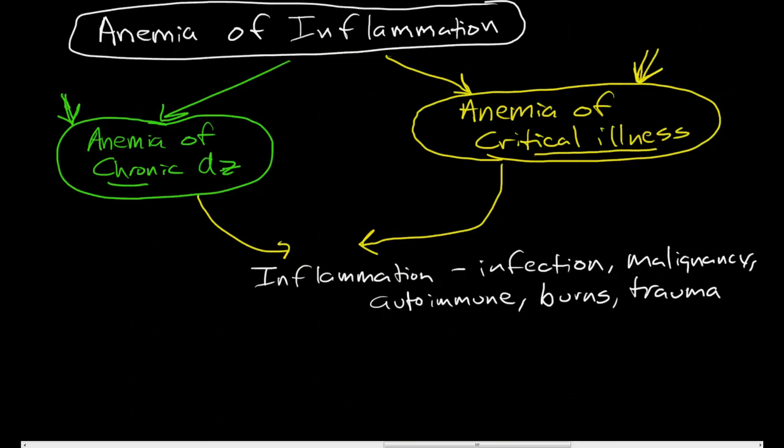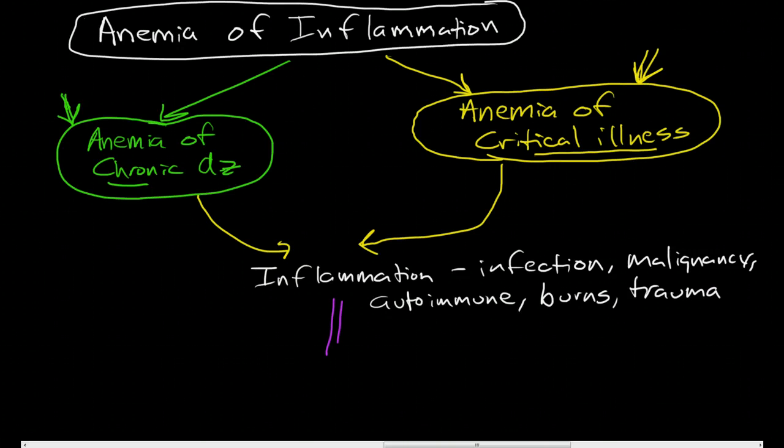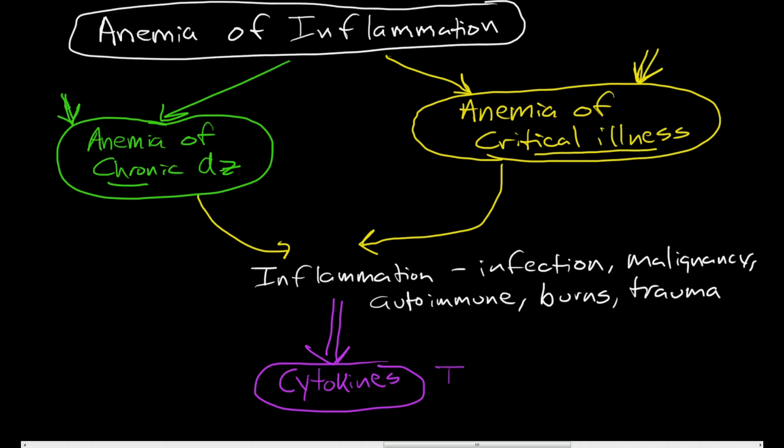Now, what happens is this inflammation starts a process that begins because of the release of cytokines. The ones that are implicated in this anemia of chronic disease are IL-1 and IL-6, and I believe tumor necrosis factor and interferon.